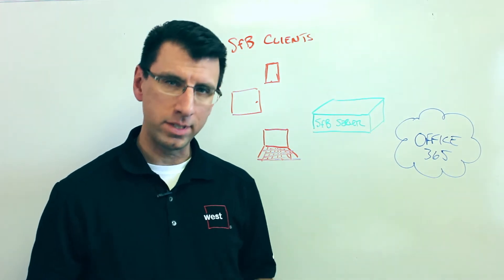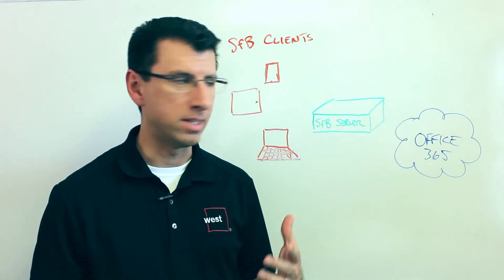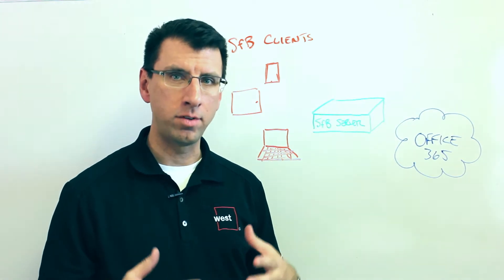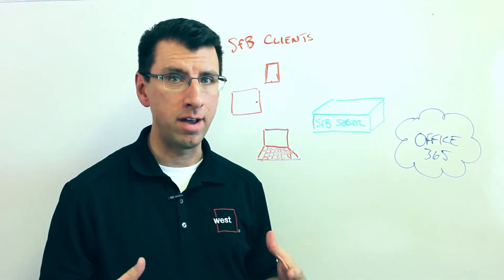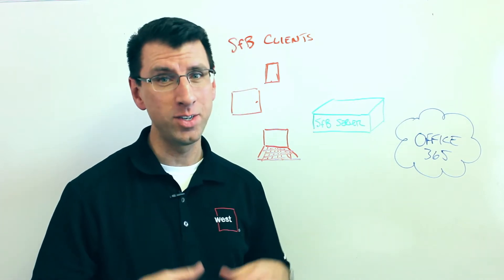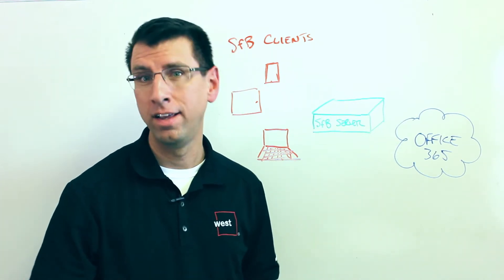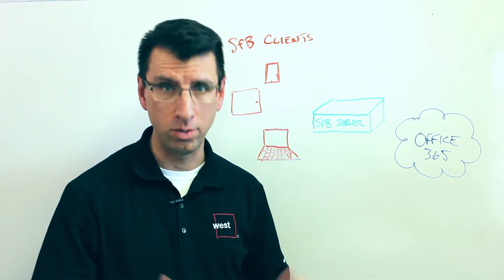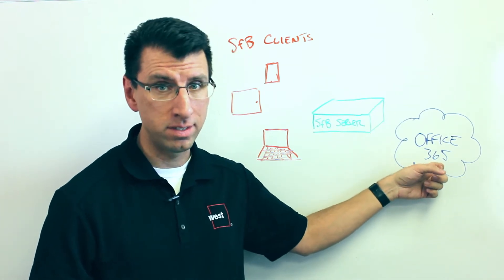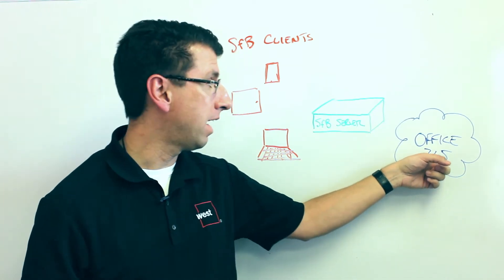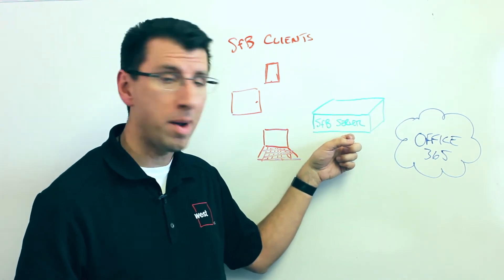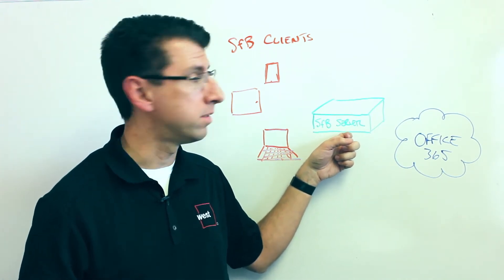When you think about integrating with Skype for Business, there's a variety of different things to consider. If you want to integrate directly into the Microsoft Office 365 Cloud and Skype for Business Online, you basically can't — there are no APIs for that. There is no way of integrating your dial tone into that. You basically have to pull the Skype for Business stuff out of the Office 365 Cloud and pull it into a server — one that you own, operate, or are hosting from somebody else.